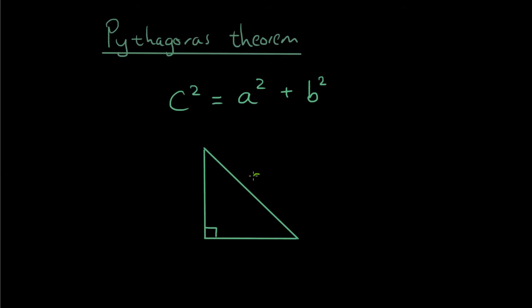So you label the longest side c and the other two sides you can label as a and b in whichever order you like. So I'm just going to put that as a and that as b.